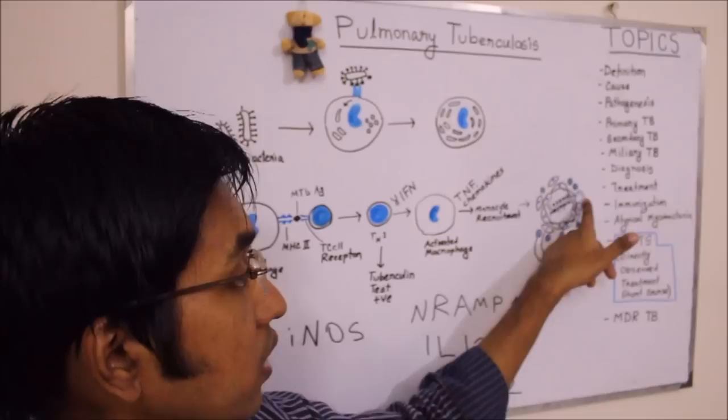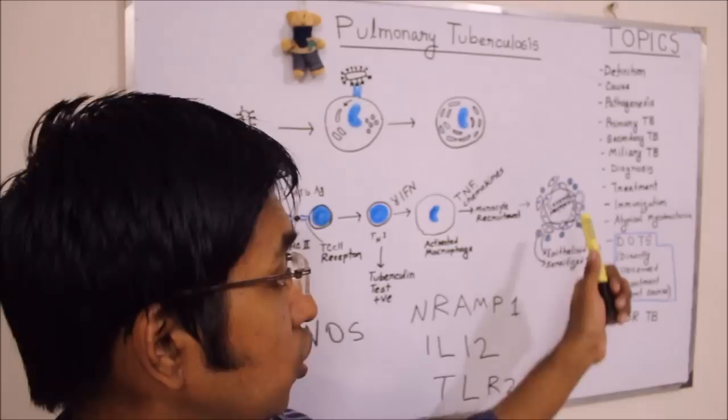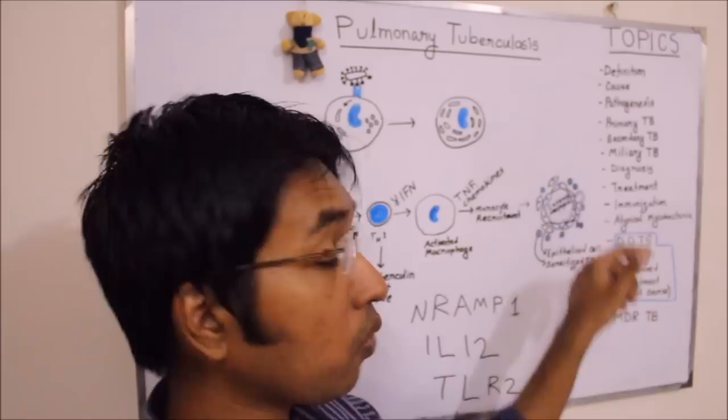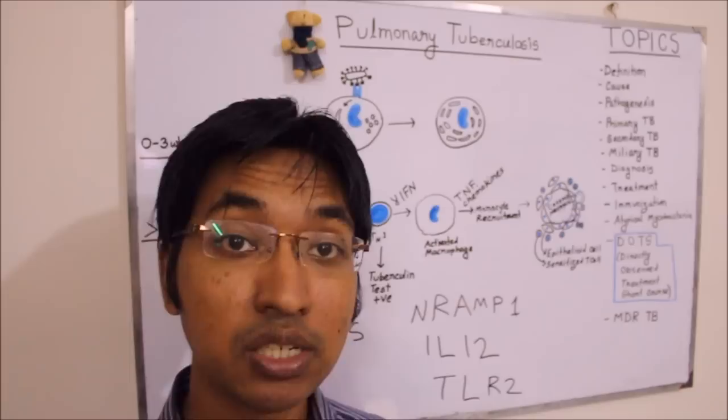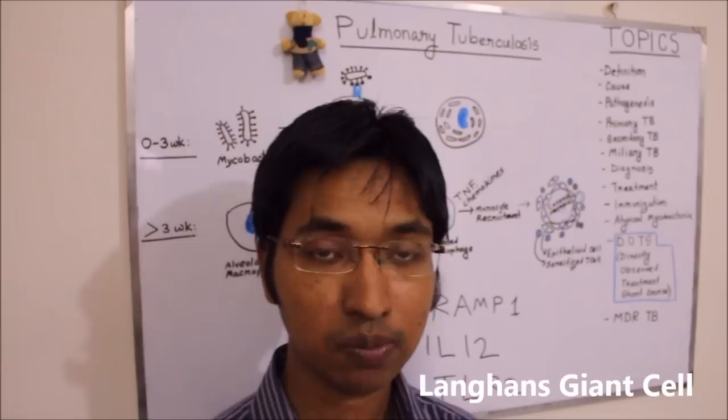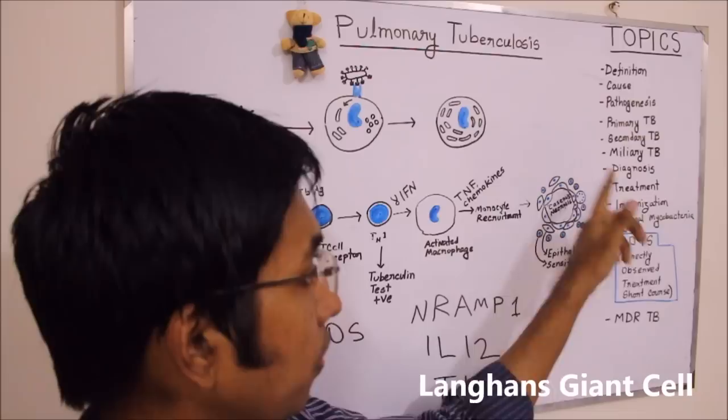Here you can see I have drawn a giant cell with multiple nuclei inside the cell. The nuclei are distributed around the periphery, sometimes in a horseshoe or circular pattern. This particular type of giant cell seen in tuberculosis lesions is known as the Langhans giant cell.